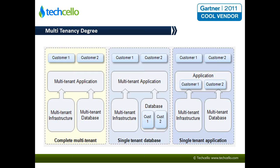The third model is a variant at the application level — a rare model but useful in some cases. The database remains common across all tenants, but the application layer is different. This could be done when you want to provide different hardware sizes to different customers — a small customer with few users gets a low-configuration system, while a large customer with many users and heavy processing gets a higher-capacity server. You charge these two customers differently according to the configuration provided.